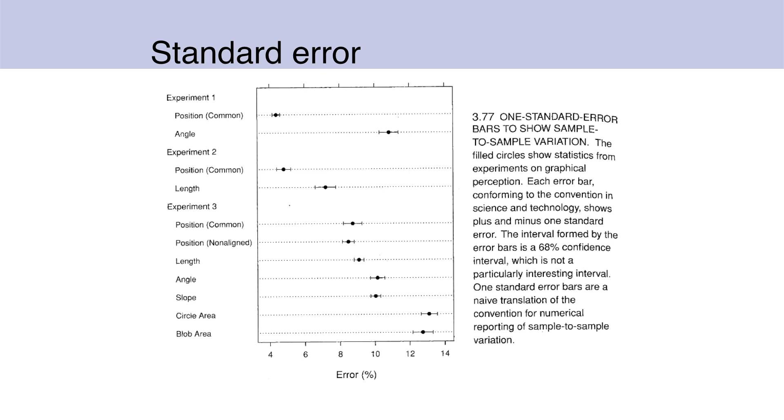And here is a page from his book. He mentions that each error bar conforming to the convention in science and technology shows plus or minus one standard error. The interval formed by the error bars is a 68% confidence interval, which is not a particularly interesting interval.